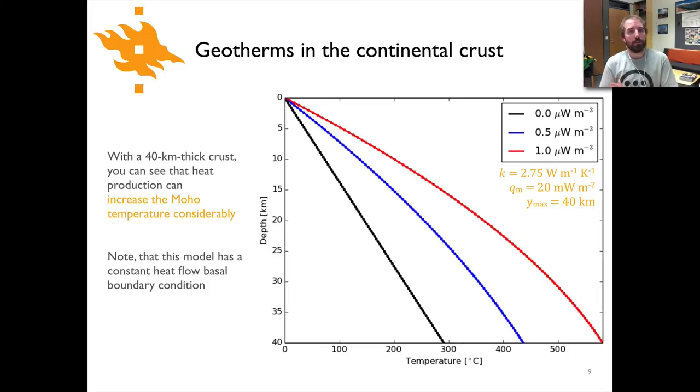We can take a look at a couple other examples now of geotherms that are more typical for places like continental crust settings. Here we've got a 40 kilometer thick crust. In this case we've plotted different colored lines for different heat production values to give you an idea of how much heat production can matter. I'm using a different equation than what was shown previously. This has a constant heat flow boundary condition. What you can see here is if the crust was 40 kilometers thick, just by changing the heat production you could change the temperature at the base of this crust quite significantly. You're under 300 degrees C here if you have no heat production, and if you have a constant one microwatt per cubic meter you can see temperatures in excess of 550 degrees C. That clearly shows you the contribution of heat production in this kind of setting.